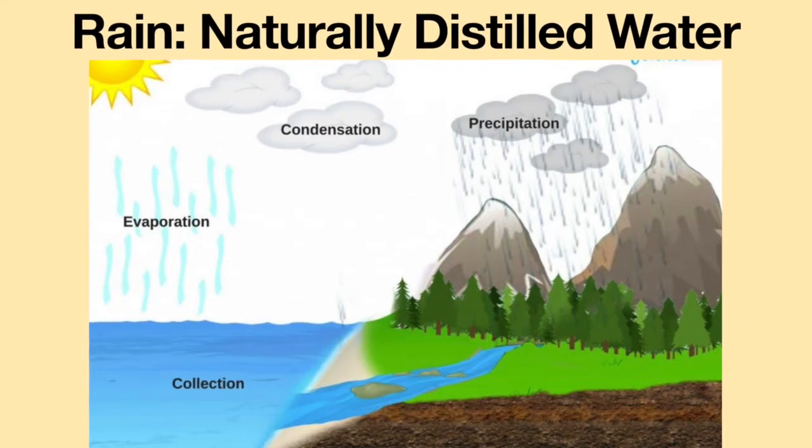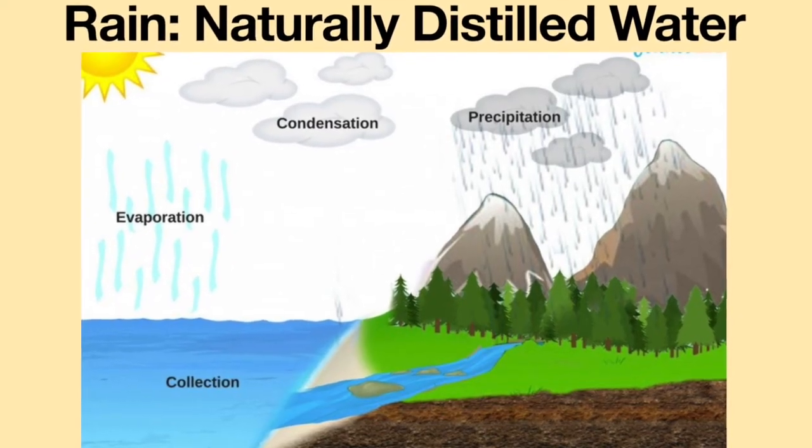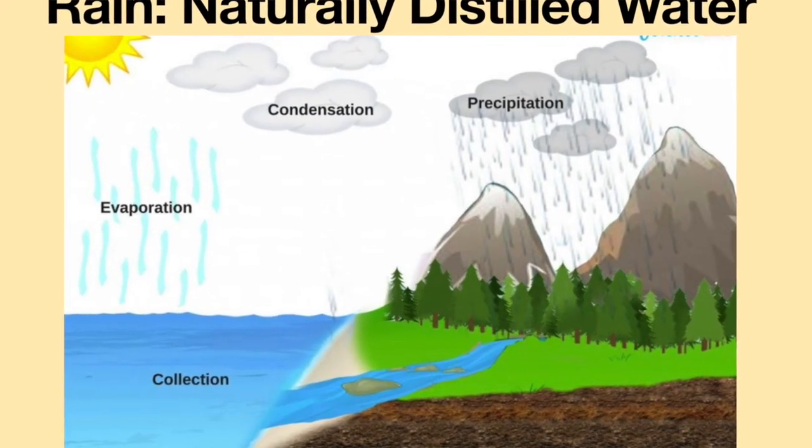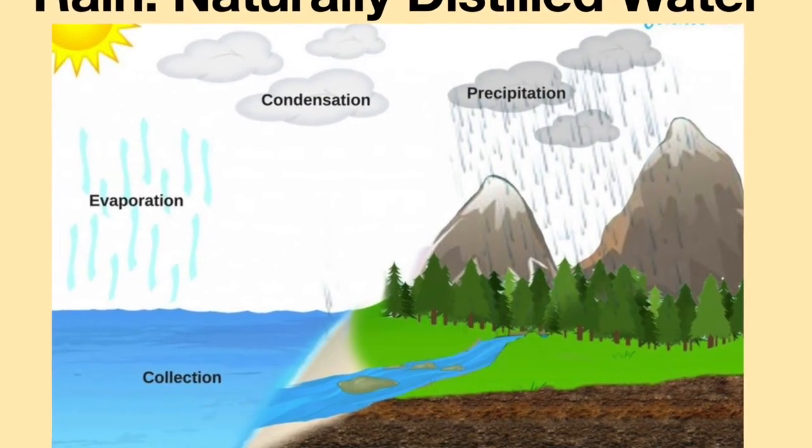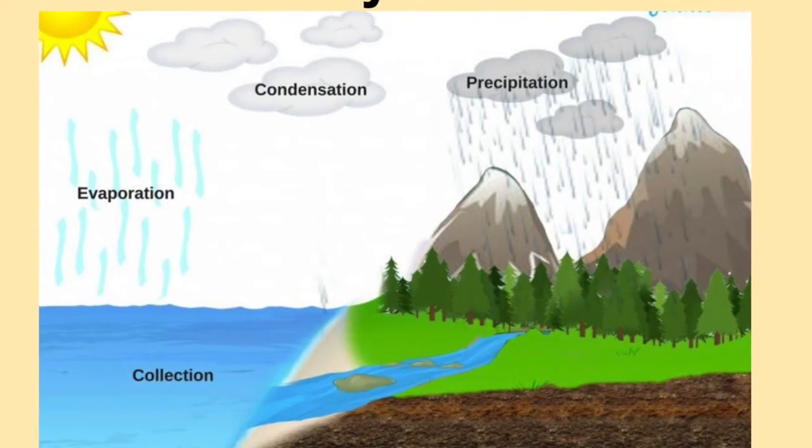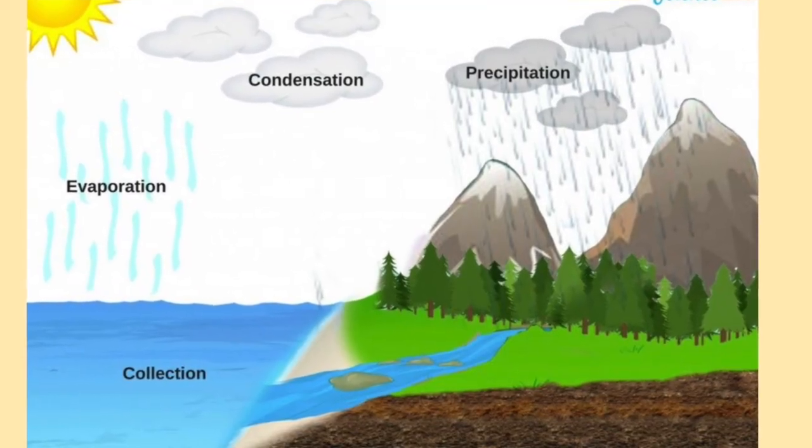Rain is water which has been naturally distilled. On a hot day, the sun causes water on the earth's surface to evaporate, creating a vapor. When the vapors rise, they become clouds. When the temperature cools, the clouds release the vapor in the form of rain. Unfortunately, by the time the rain gets to the earth, contaminants such as dirt and pollen have attached themselves to the droplets, rendering the rain unsuitable for use as distilled water.